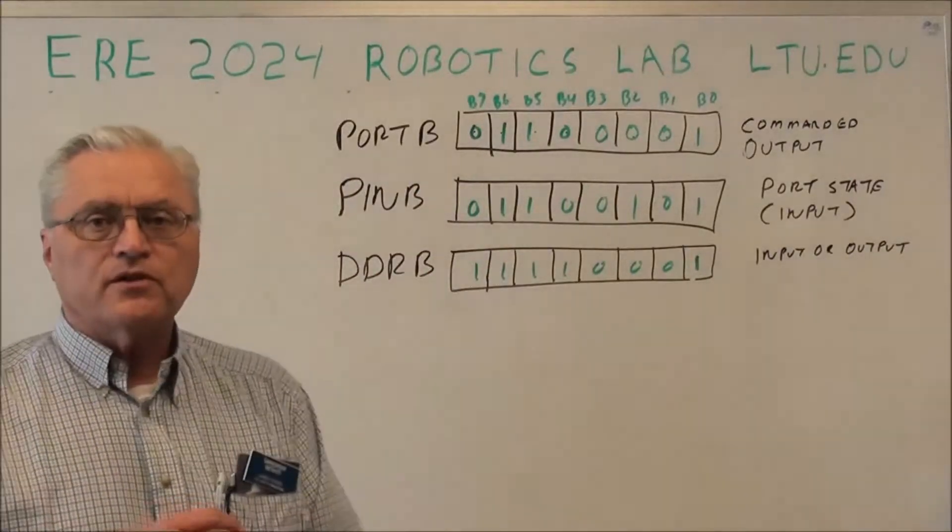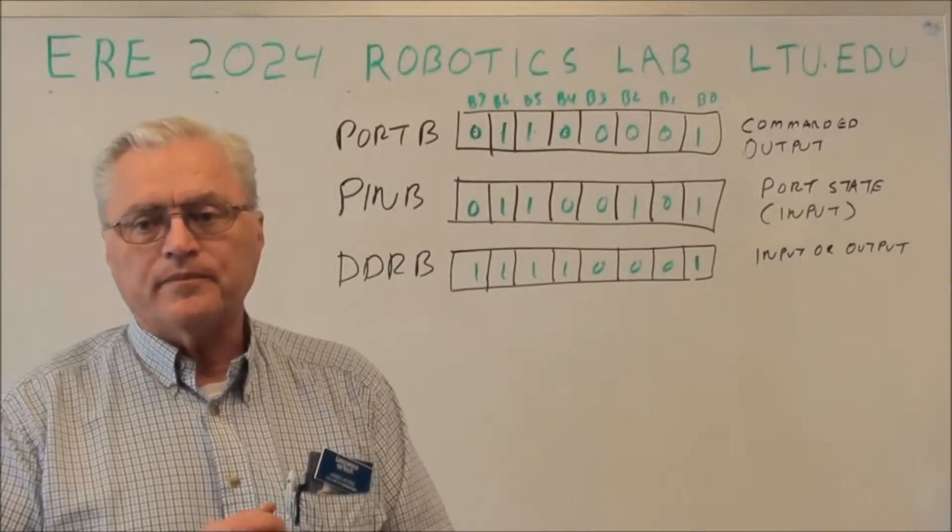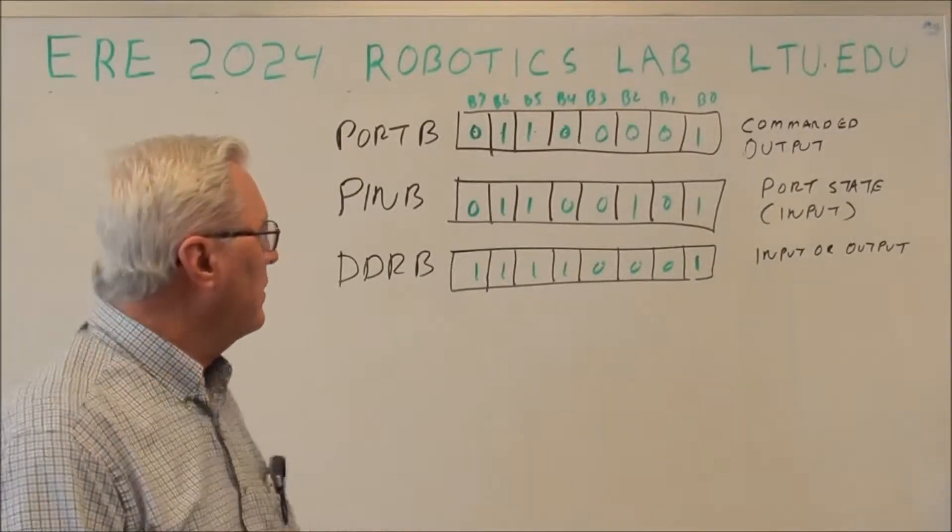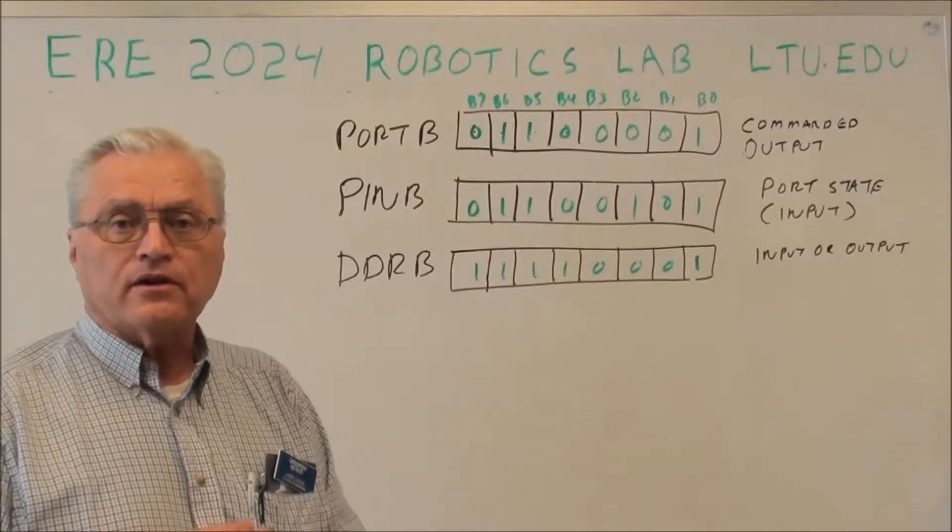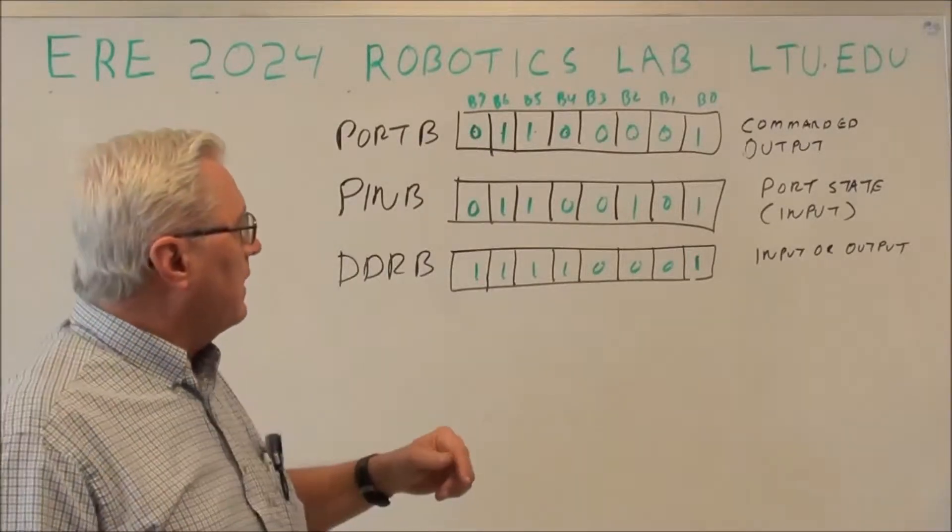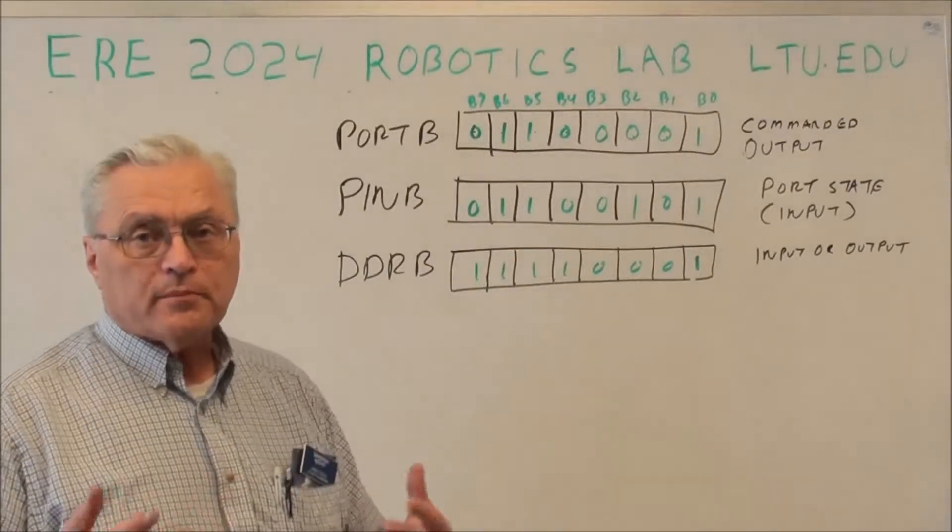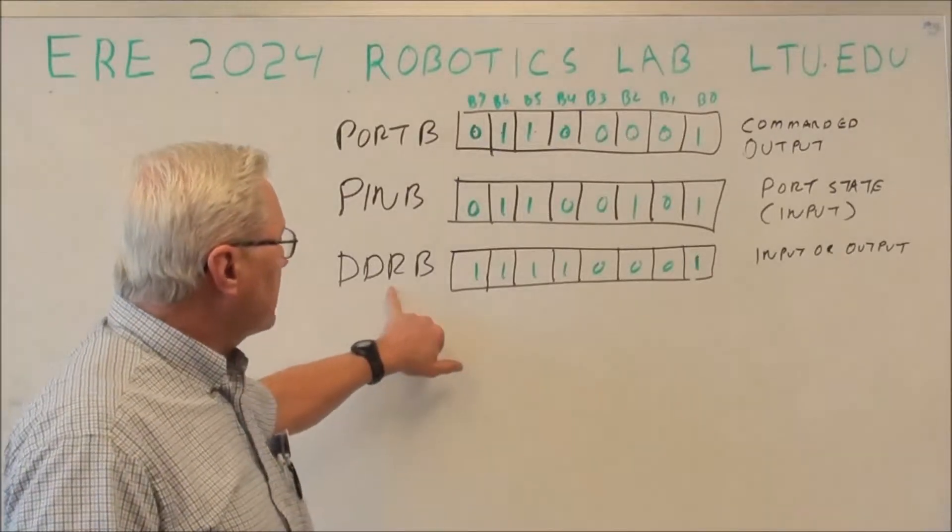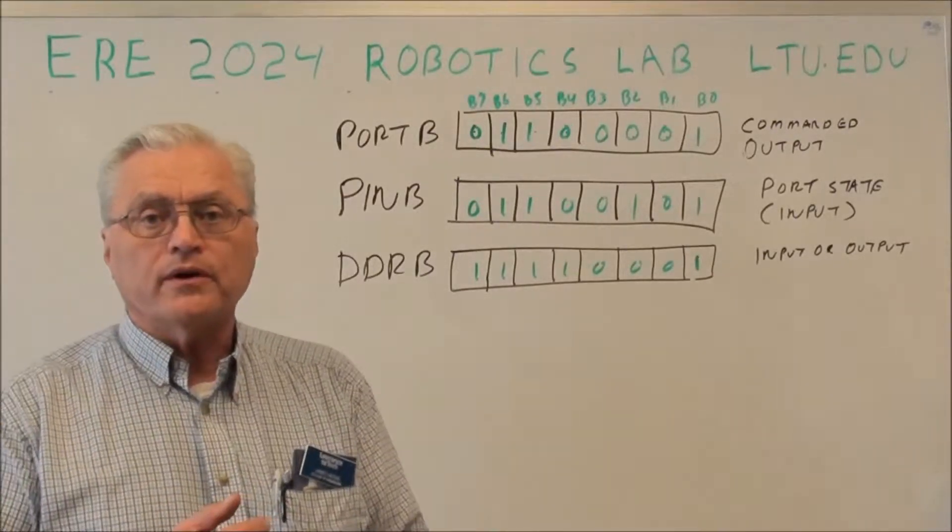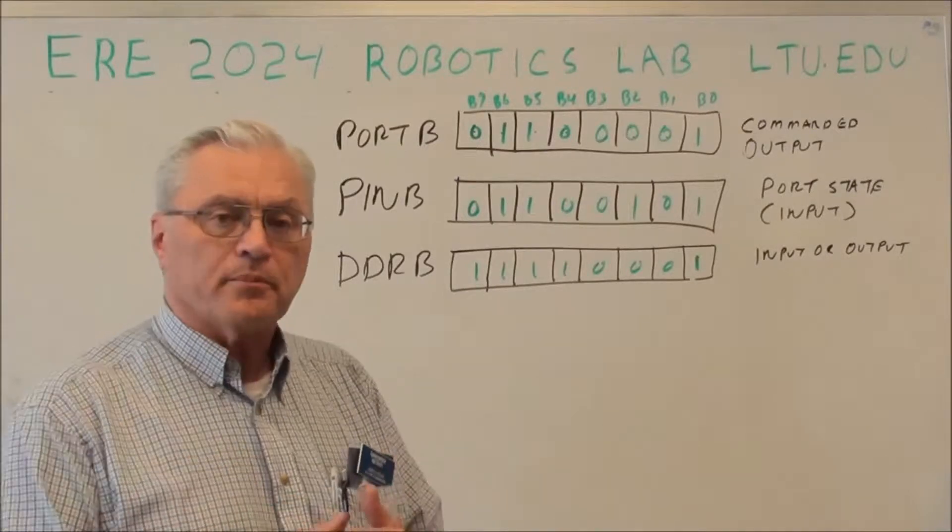The port is the register you write to to make an output go high or low. The pin is the register you read to read the current status of that output. It could be an input, it could be an output. And the data direction register is the port that you write to to make a particular pin an input or an output.